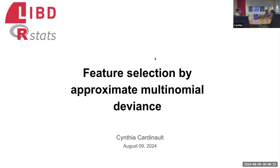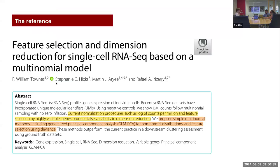Good morning, everybody. I'm going to start the meeting for today. Thank you for attending. The topic is called Feature Selection by Approximated Multinomial Deviance. This model was the first time that I implemented this workflow. The paper I used as reference is 'Feature Selection and Dimension Reduction for Single-Cell RNA-Seq based on the Multinomial Model' from 2019.